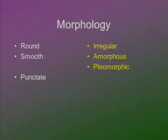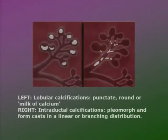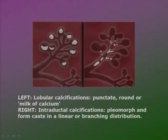Regarding morphology: if they're round, smooth, or punctate, then they're benign. If they're irregular, amorphous, or pleomorphic, then they're suspicious or malignant. Morphology refers to their shape. On the left you can see lobular calcifications with a specific teacup image — those are always benign.